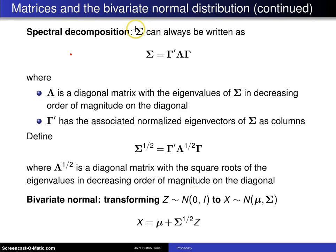The variance covariance matrix sigma can always be written as sigma equals gamma prime times lambda times gamma, where lambda is a diagonal matrix with the eigenvalues of the variance covariance matrix in decreasing order of magnitude on the diagonal, and gamma prime has the associated normalized eigenvectors of the variance covariance matrix sigma as columns.